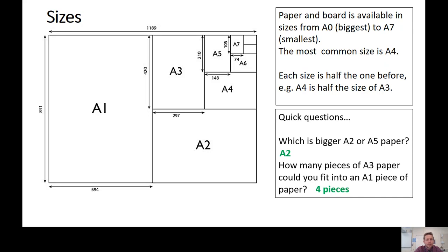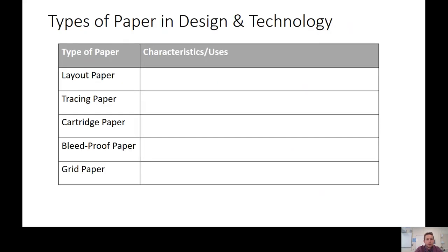So that's the A sizes — that's how we most commonly buy our paper, and the rule is that each size is half the one before, so A4 is half the size of A3. Now let's move on to the second and final part of today's lesson. In design and technology, we need to know about the different types of paper available to us. There are many, but there are five that we need to know about.